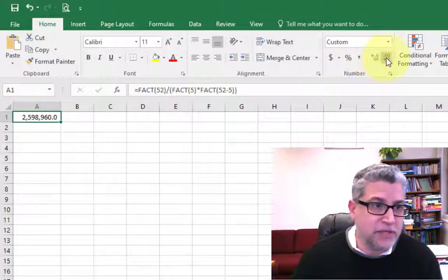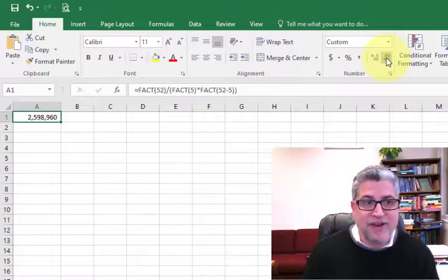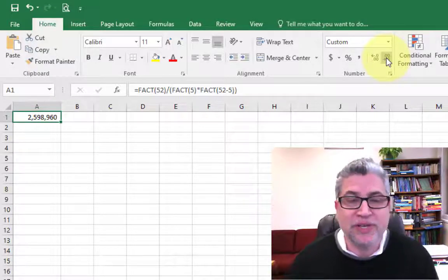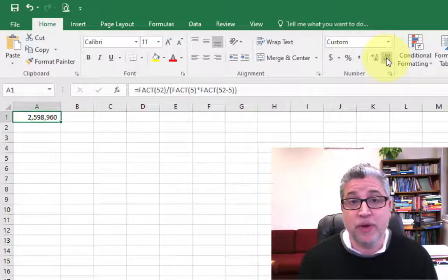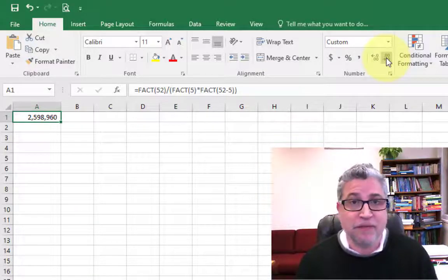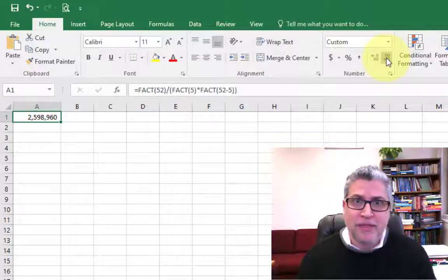There are, if we get rid of our decimals and do some formatting, about 2.598 million. So 2.6 million different kinds of hands that you could be dealt with a single deck and 5, like a 5-card draw kind of poker. That's a lot.